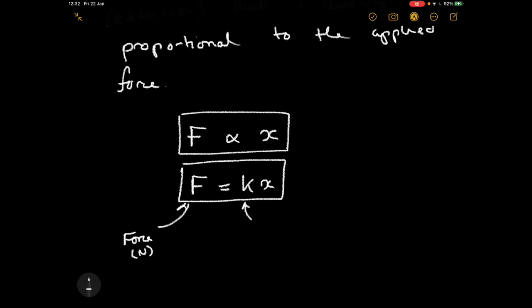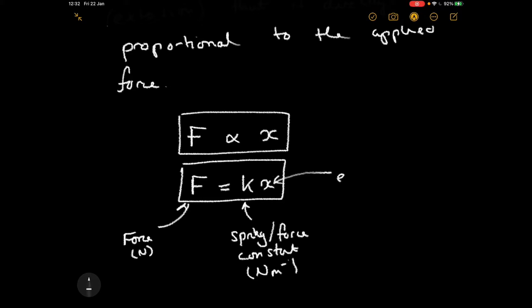That is summed up through the relationship that F is directly proportional to the extension, which gives us F equals kx. Force is in newtons, k is called the spring constant or force constant measured in newtons per metre. If your extension is measured in centimetres, you would have a force constant in newtons per centimetre.